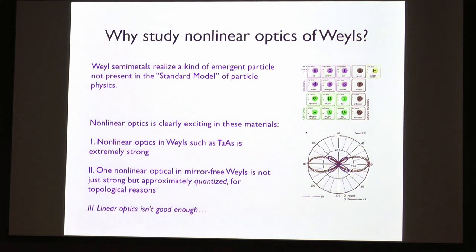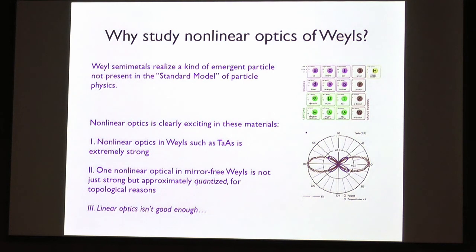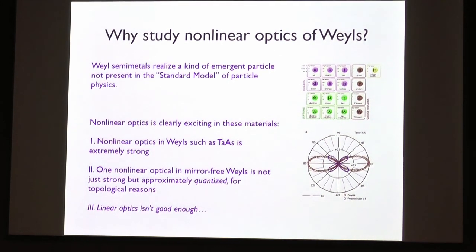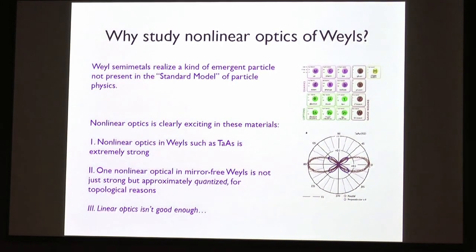The original excitement about Weyl semi-metals is that at low energy, these are three-dimensional semi-metals with what looks like a massless electron — except it's always left-handed or always right-handed, meaning the spin is always in a particular direction relative to the motion. That's a kind of fermion thought about by Hermann Weyl in the early days of quantum mechanics. For a long time we thought they would exist as fundamental particles; it turns out they don't in the standard model, but as of 2015 they do exist in solids.